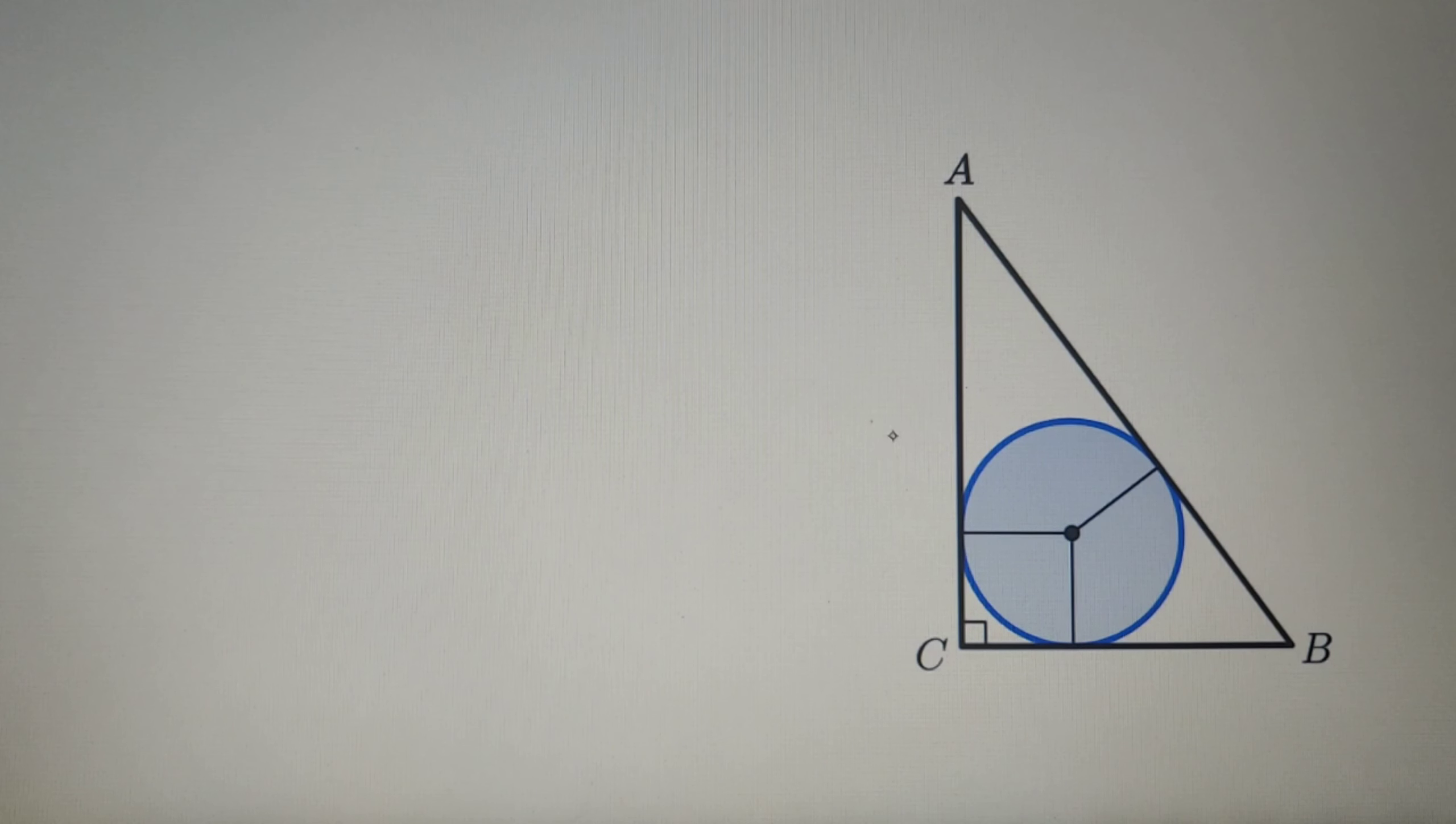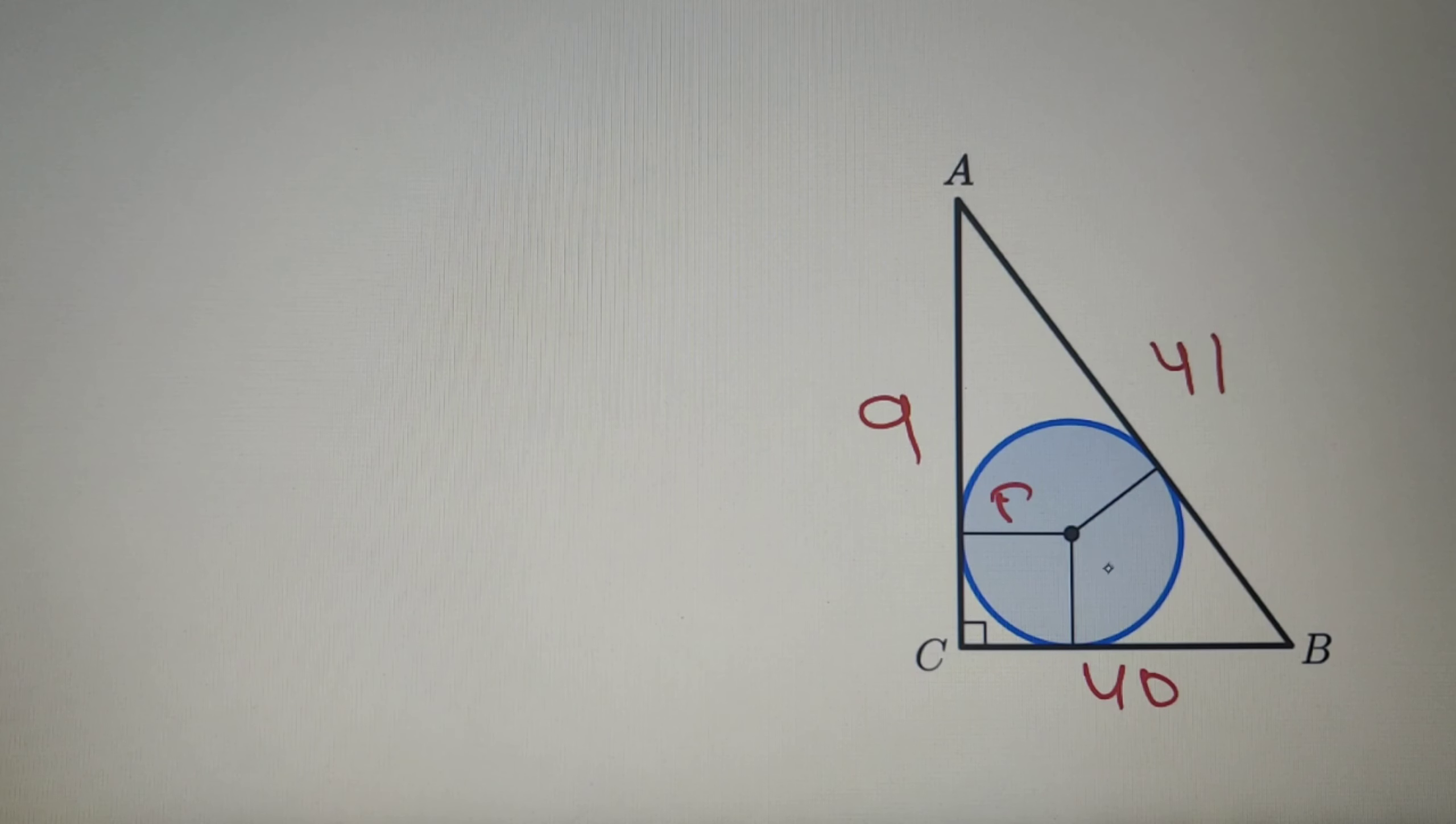So according to our given question, the length of side AC is equal to 9 centimeter, the length of side BC is equal to 40 centimeter, and the length of side AB is equal to 41 centimeter. We have to find the in-radius of the triangle, that is, we have to find the value of small r.